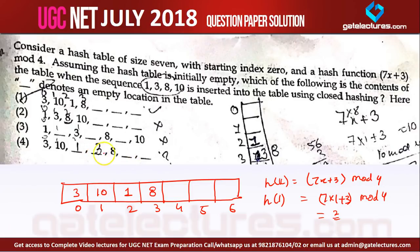The final hash table will look like this, with values 3, 10, 1, 8 placed at their respective locations and 3 empty locations remaining. The answer matches option 1: locations contain 3, 10, 1, 8 with three empty slots (denoted by dash).